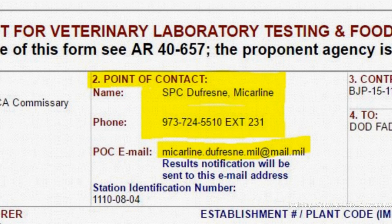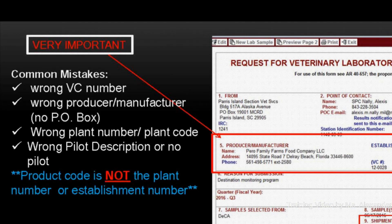If you are sending the product, then your name and phone number is entered in this block. As mentioned previously, Block 5 of the DA Form 7539 is very important when sending samples to the lab. This is because when the result of the samples does not meet the standard, the lab can trace the product back to the producer.